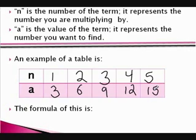What is the formula of this? Well, first, to figure this out, we look at our table. We multiplied N by 3 each time, so A to the N equals 3N, or 3 times N, because we are multiplying our number of term by 3 each time.